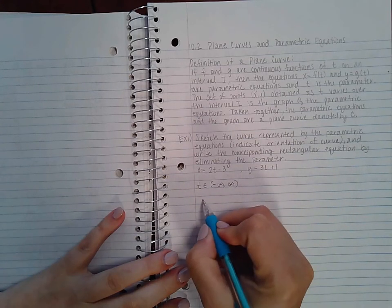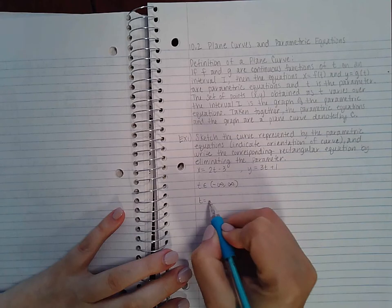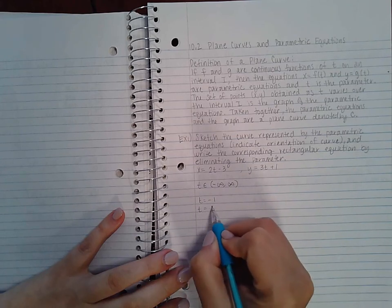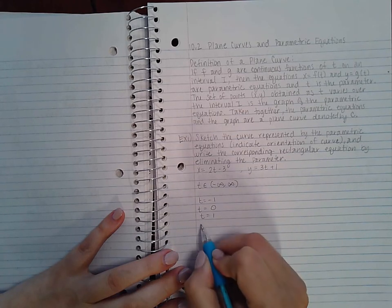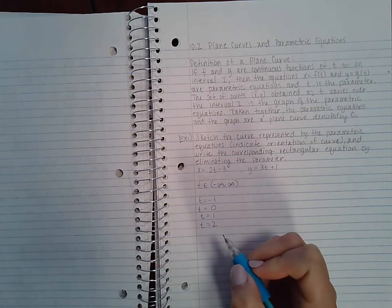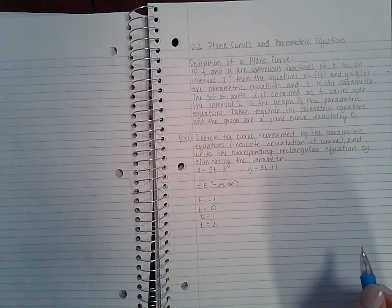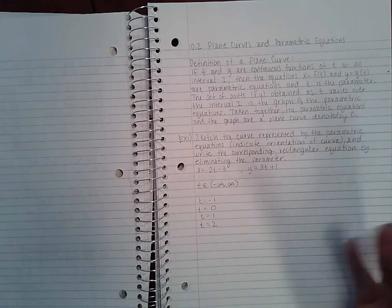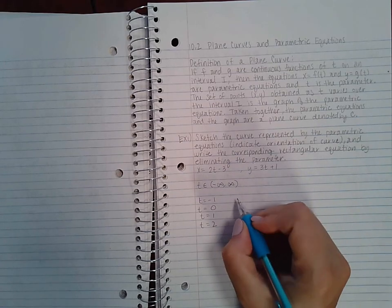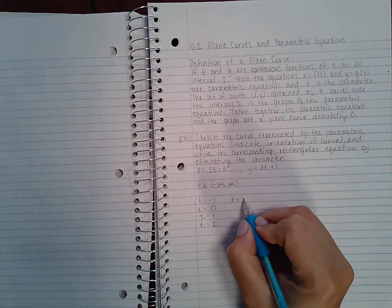1, t = 2, and depending on what our graph looks like at that point we may need more. Let's go ahead and see what our function is going to look like. For x we're going to get 2 times -1 minus 3, which is -5. For y we're going to get